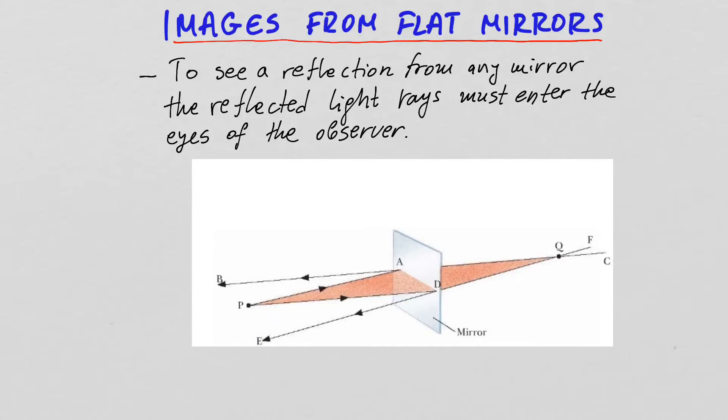And the second ray starts from P, it reflects at A, and then propagates towards B. So if there is an observer at point E or at point B, they will be able to observe the light reflection from the mirror. But for them, it will look as if the light is coming from point Q, which is behind the mirror.